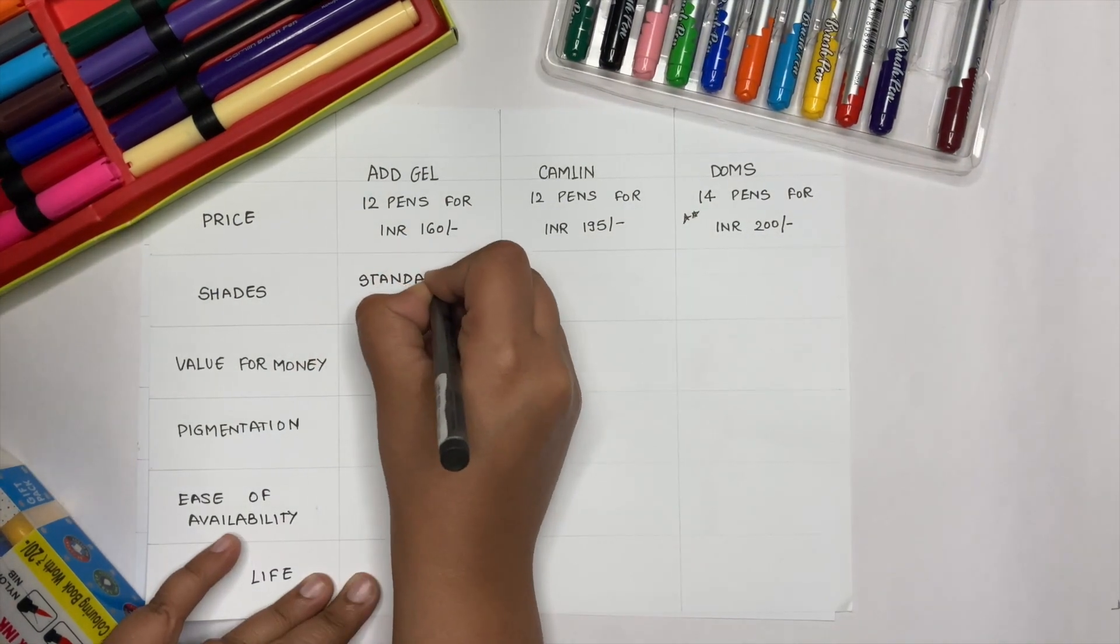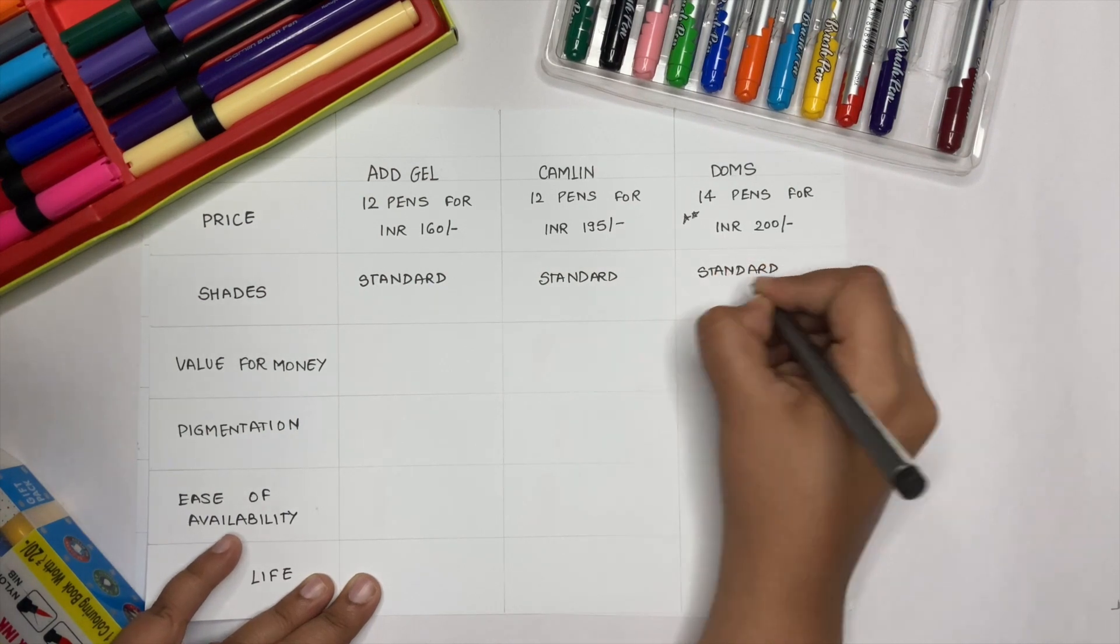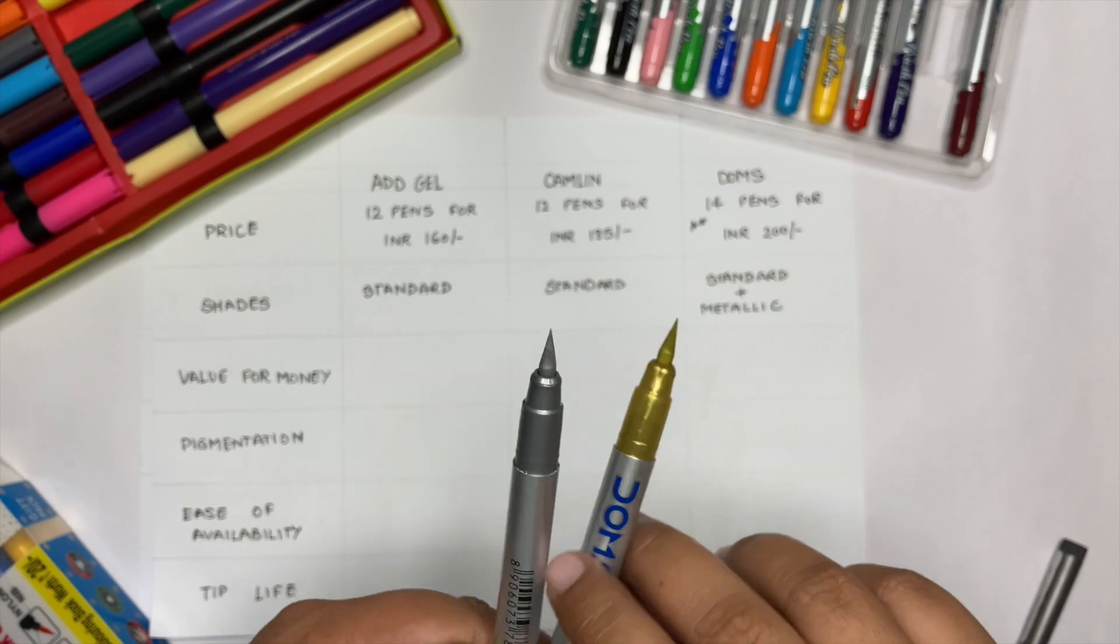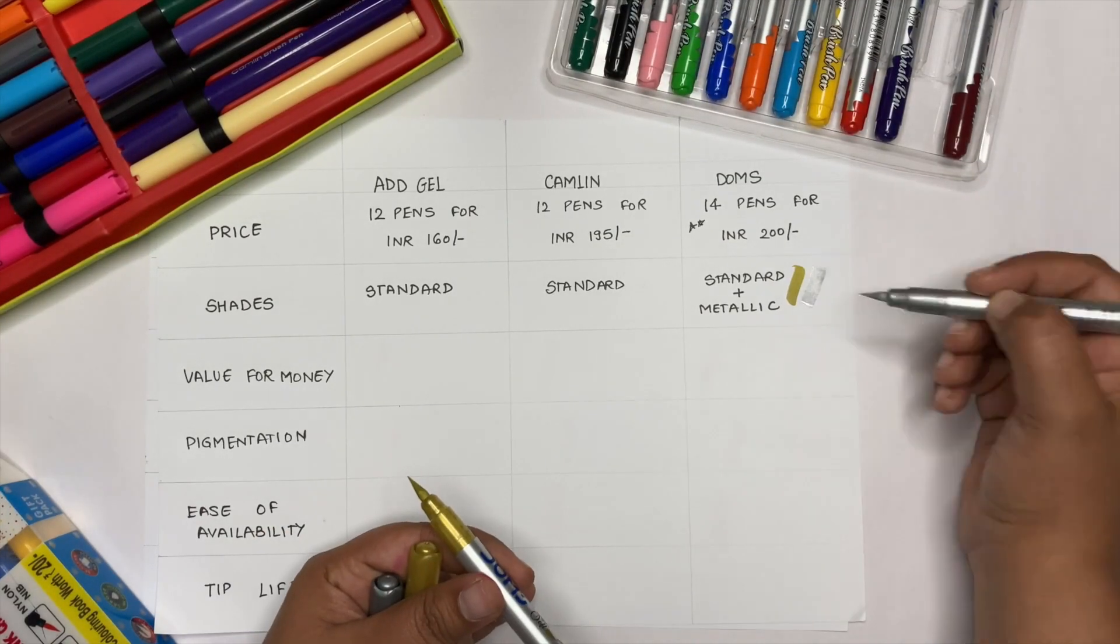You get 12 standard shades in a set of ADD Gel and Camlins. But if you buy DOMS, you get two additional metallic shades, gold and silver. These are a must try.